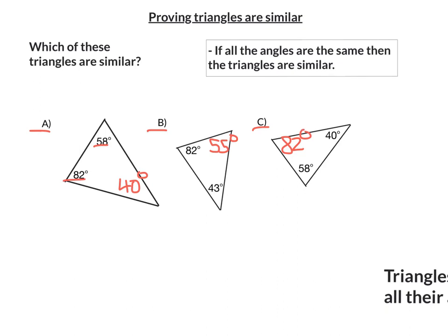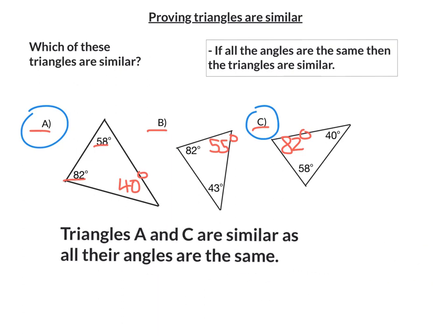So we need to look at the triangles which have all the same three angles. Well, that is A and C. They all have 82, 58 and 40. So we would write triangles A and C are similar as all their angles are the same.